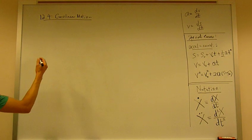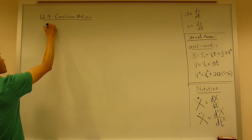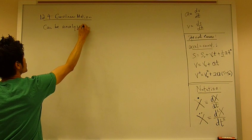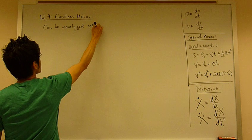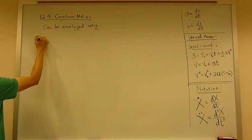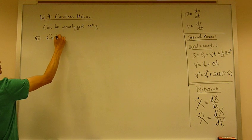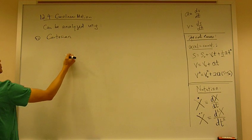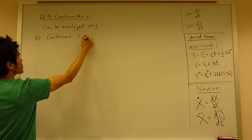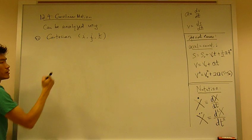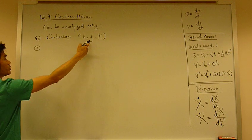Curvilinear motion can be analyzed using three coordinate systems. The first coordinate system is Cartesian, which is i-j-k-direction. It's got a unit normal.